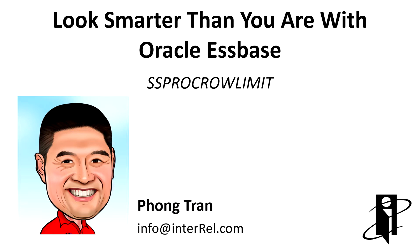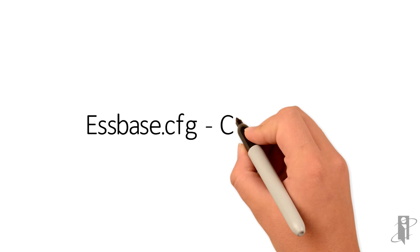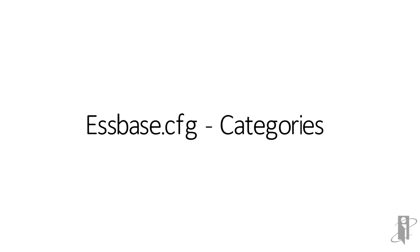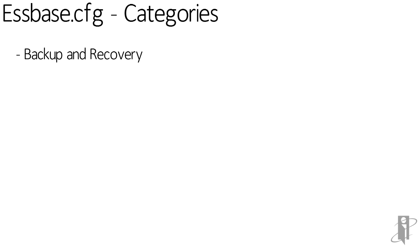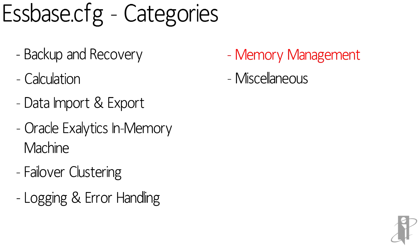Welcome to the Look Smarter Than You Are with S-Space series. In this video, we will look at the spreadsheet process row limit. This setting is used in your S-Space configuration settings file. Of the dozen categories for the config file, the spreadsheet process row limit setting falls under the memory management category.